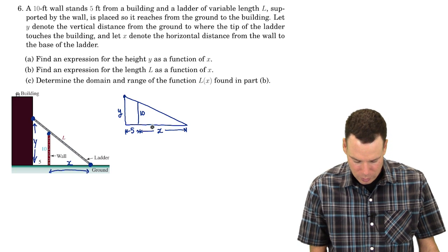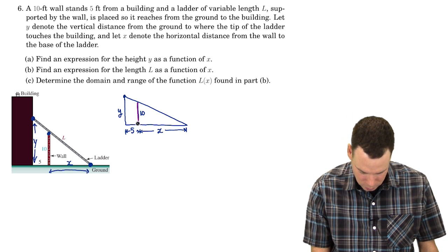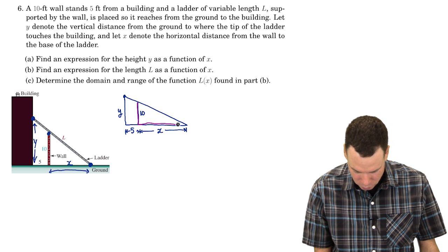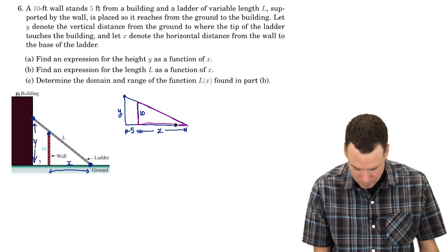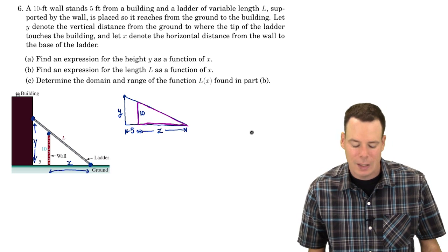Do I have a relationship between X and Y? Well, the key to note here is that I've got similar triangles. Like this purple triangle, a small purple triangle, and the big triangle, they have all three angles in common, so they're similar.